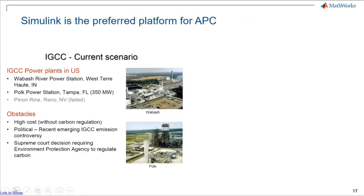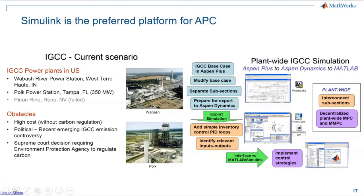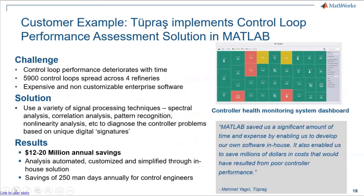An example comes from a gasification plant in the US which had issues controlling emissions. Rather than upgrade hardware, they decided to implement better control algorithms. They built a rigorous plant model in Aspen Plus, exported it to Aspen Plus Dynamics where they added simple PID loops, then exported it to MATLAB and Simulink using the Aspen Plus Control Design Interface. Once in Simulink, they implemented plant-wide MPC strategies, saving a lot of money and trouble — essentially a software upgrade on the plant.